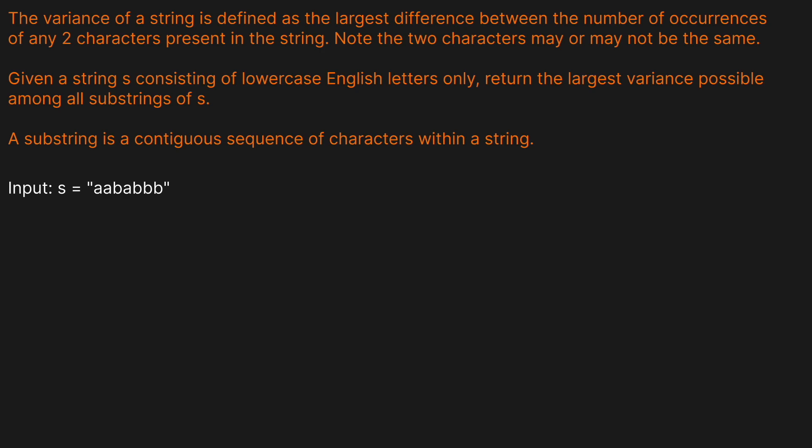The variance of a string is defined as the largest difference between the number of occurrences of any two characters present in the string. Note that the two characters may or may not be the same. Given a string S consisting of lowercase English letters only, return the largest variance possible among all substrings of S, and a substring is a contiguous sequence of characters within the string.